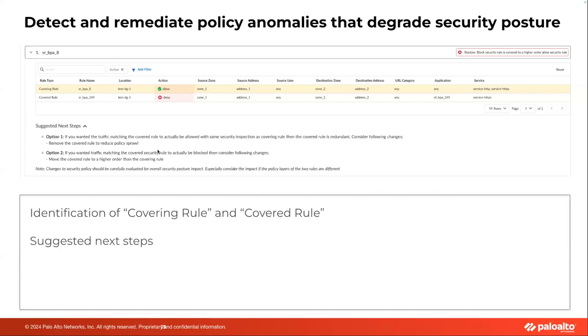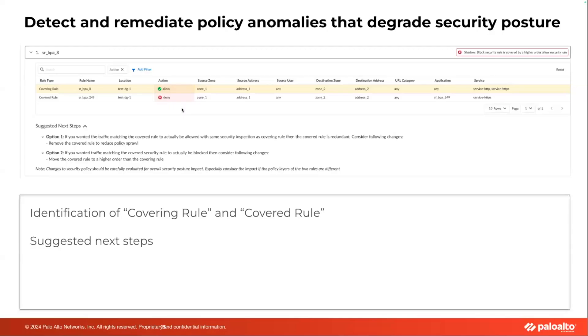Along with identifying shadows, we give you suggested next steps. If you want the traffic to actually be allowed, you can remove the covered rule since it is not being hit anyway. On the other hand, if you want that rule to be hit, it needs to be placed higher in the rule base so that it follows the security policy you actually want. We also identify redundancies and possibilities for consolidation, as well as other correlations and anomalies in your rule base. That is the brief overview of security policy analysis under the security posture improvement area.